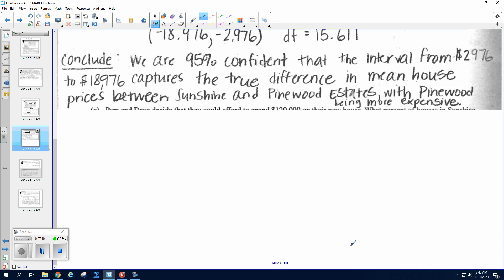Captures the true difference in mean house prices between Sunshine and Pinewood Estates, with Pinewood being more expensive. So I just explained what order I subtracted in by saying that Pinewood was more expensive instead of using the negatives.